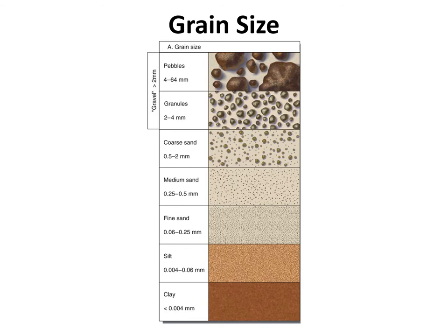Gravel-sized grains are the easiest to see — if you pick up a rock and can actually see chunks of other rocks or large minerals protruding from the surface, it's got gravel-sized grains. Slightly smaller grains that you can still see but with difficulty are probably sand — sand has a coarse, rough sandpaper-like feeling. With smaller particles like silts and clays, the surfaces of these rocks are pretty uniform. It's hard to tell without a hand lens or microscope the size of the crystals or sediment grains present.